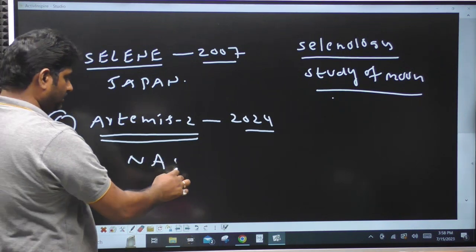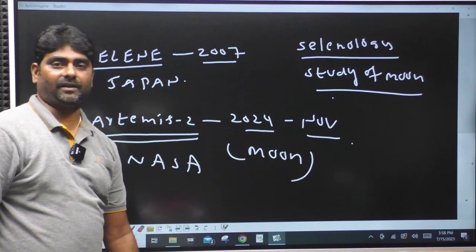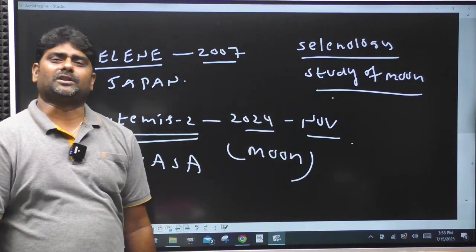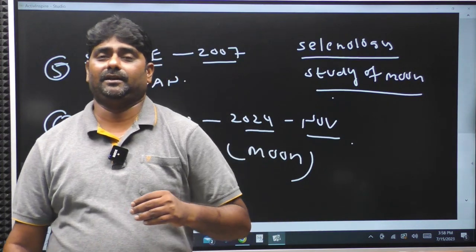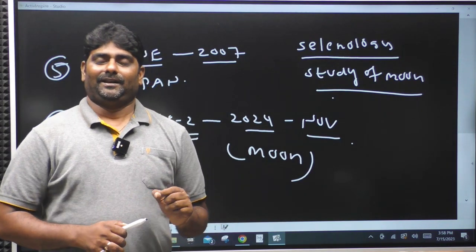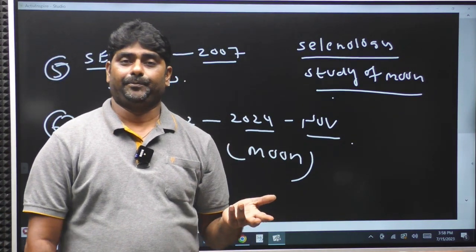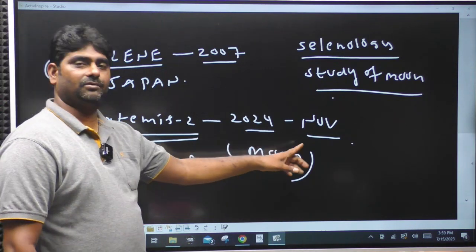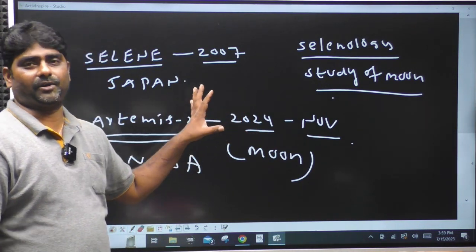Artemis II is an upcoming NASA mission planned for 2024. This is also very important. NASA's Artemis II is planned for 2024.